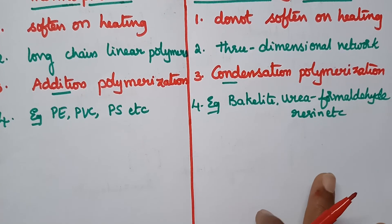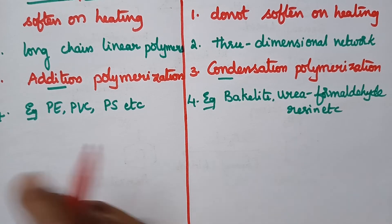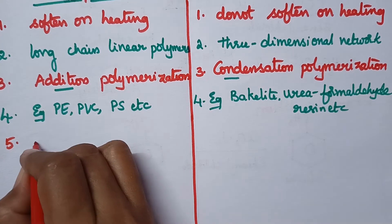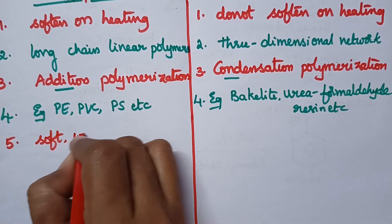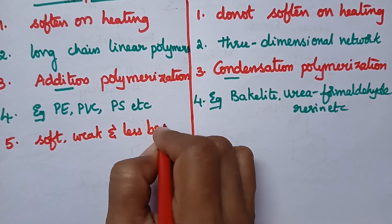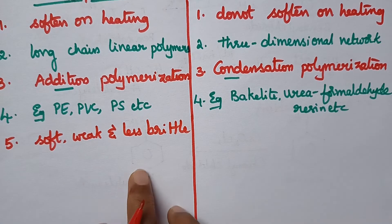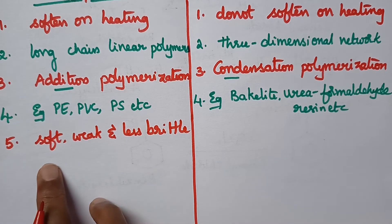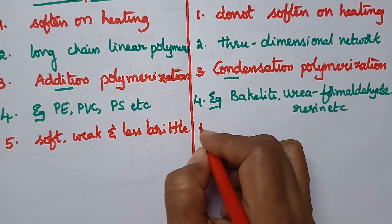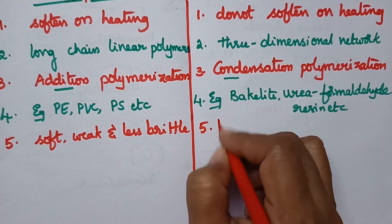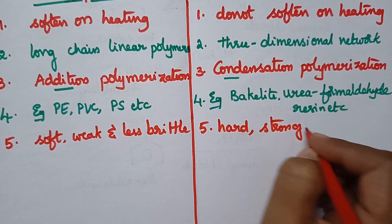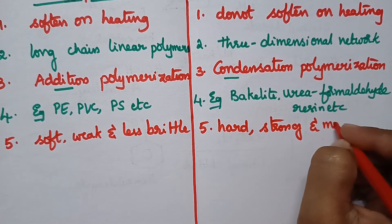When we observe the nature of thermoplastics, generally they are soft, weak and less brittle in nature. Coming to the thermosetting plastics, they are hard, strong and more brittle.